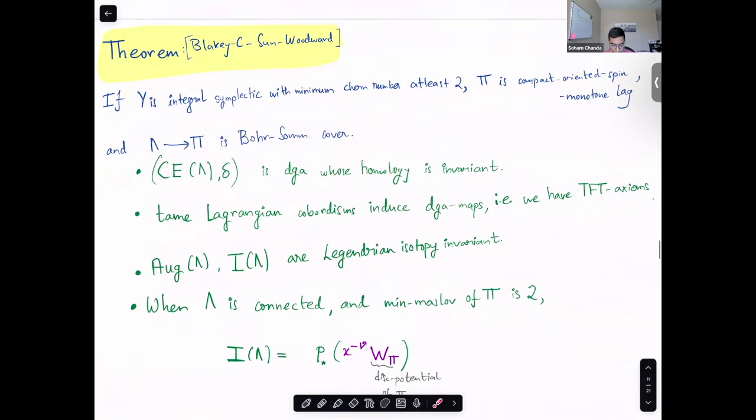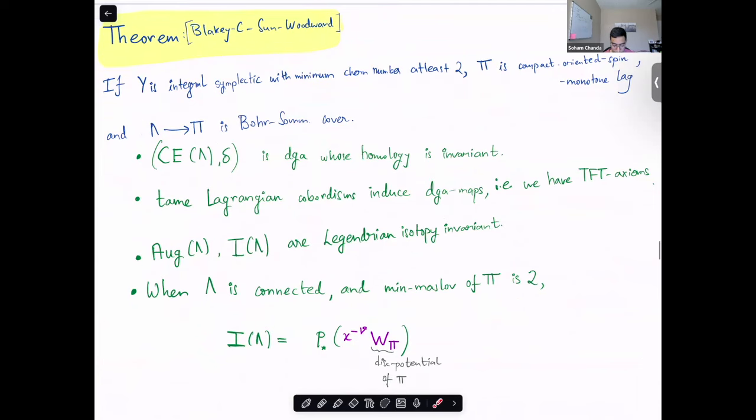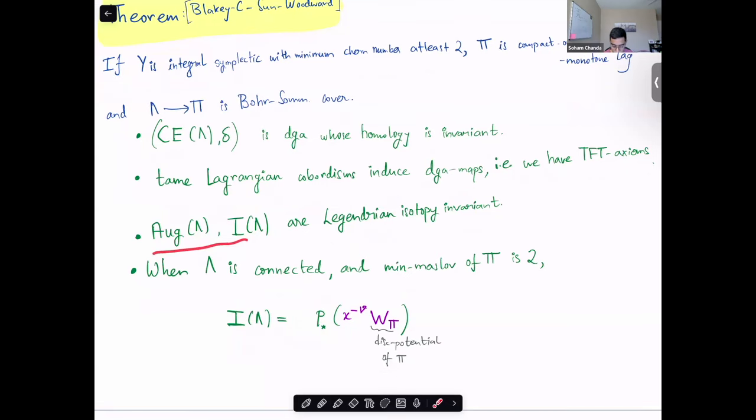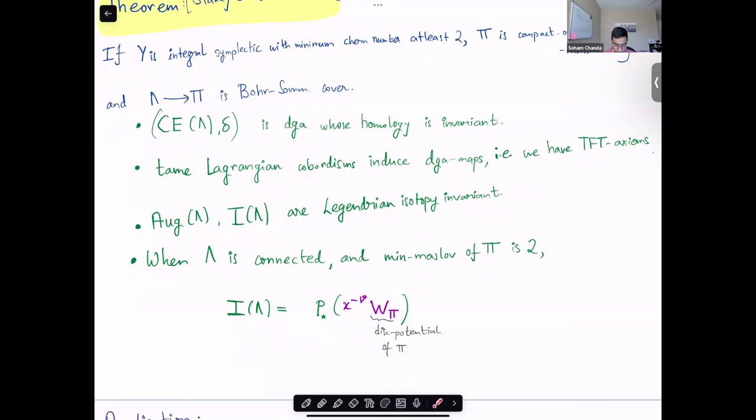Okay, now I'll collect some of the main theorems in the paper. The assumptions are Y is integral symplectic with minimal Chern number at least 2. My Lagrangian is compact-oriented spin monotone. I need all of this to make sense of disk potential with complex coefficients. And lambda is a Bohr-Sommerfeld cover. With this hypothesis, we have these two results which we have already discussed. That the Chekanovic algebra is a DGA whose homology is invariant. TEAM Lagrangian cobordisms induce DGA maps, that is, we have TFT-like axioms. We construct the augmentation variety and augmentation ideal and show that they are Legendrian isotopy invariant. And when we know that the Bohr-Sommerfeld cover is connected and that the minimal Maslov number of my Lagrangian is 2, we can actually write down what the augmentation ideal is.